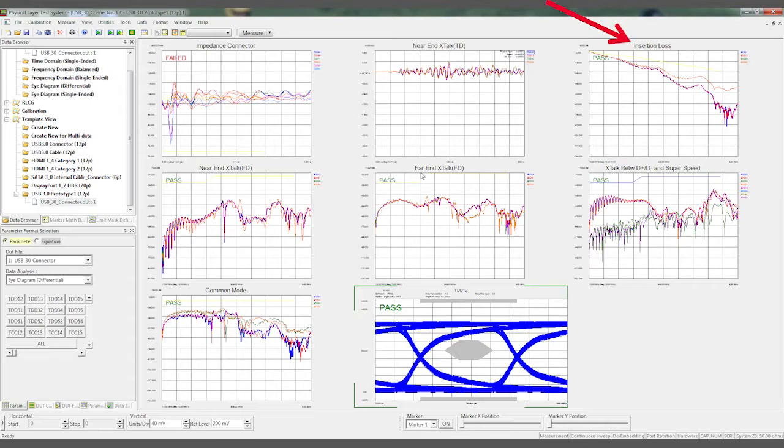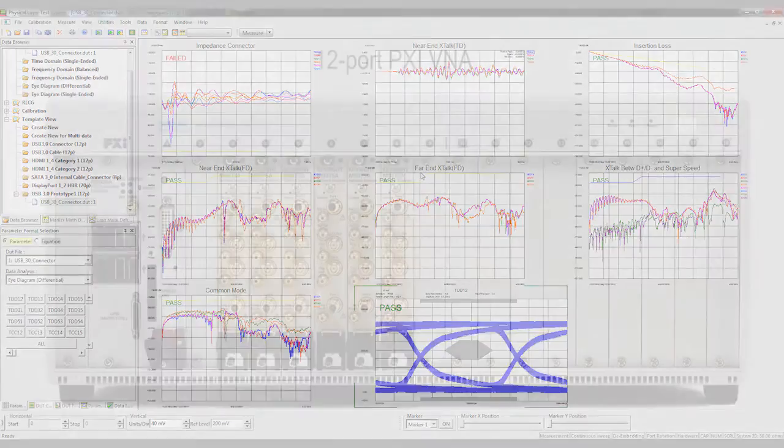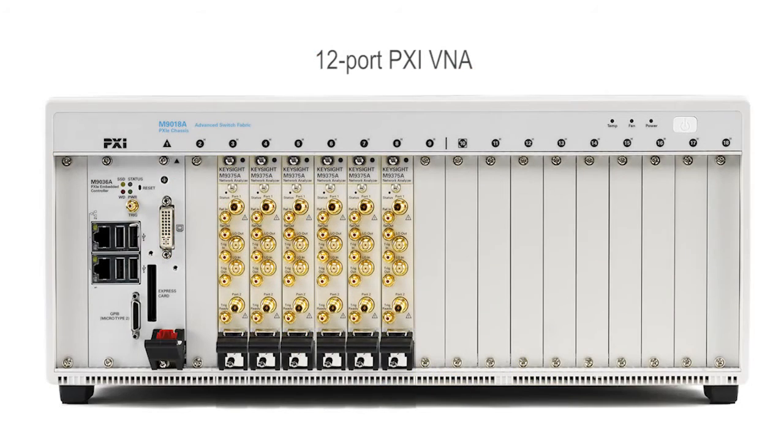We have differential insertion loss, crosstalk parameters, and common mode all displayed from the single-pass measurement utilizing 12 ports of the PXI VNA system shown here.